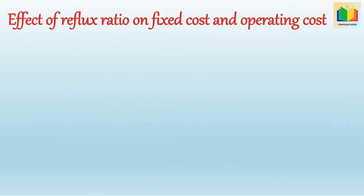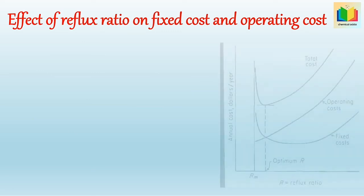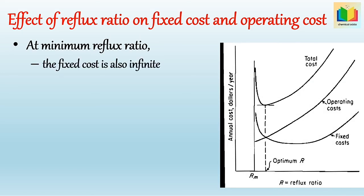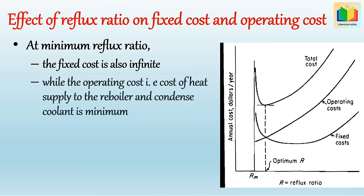The next topic is the effect of reflux ratio on fixed cost and operating cost. In this graph, reflux ratio is plotted on the x-axis and annual cost is plotted on the y-axis. From this graph we can say that at a minimum reflux ratio the fixed cost is infinite, while the operating cost — that is, the cost of heat supply to the reboiler and condenser coolant — is minimum. Then as the reflux ratio is increased, the number of plates decreases.